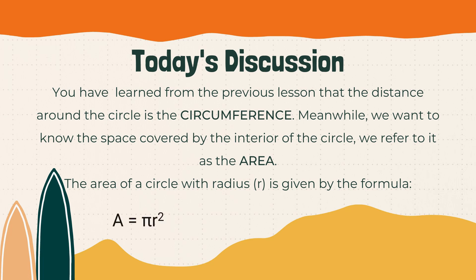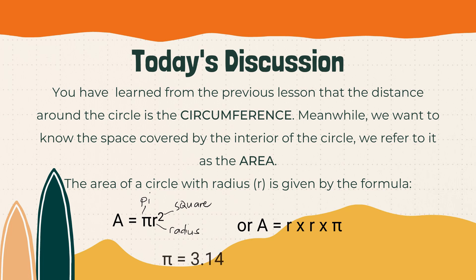The area of a circle with radius is given by the formula A equals pi r squared, where pi is what we studied in circumference, r stands for radius, and this is read as squared. Or area equals r times r times pi, where r stands for radius and pi is equivalent to 3.14.